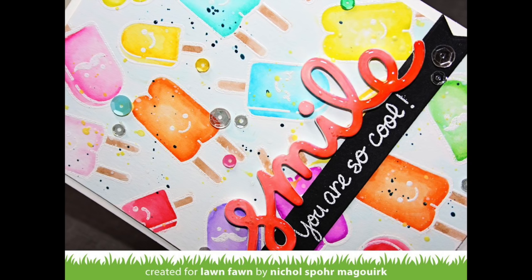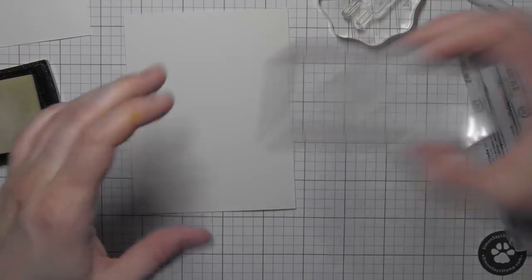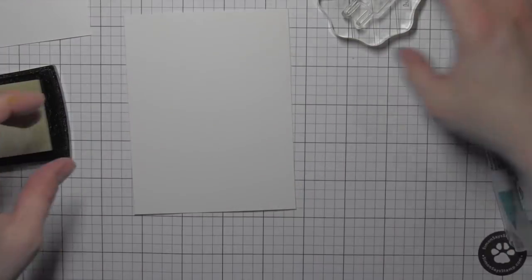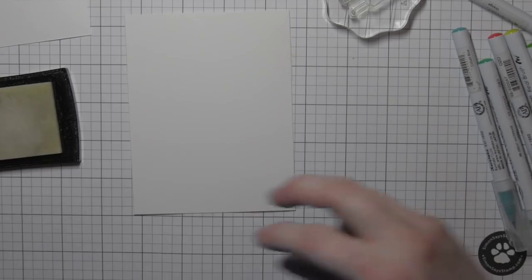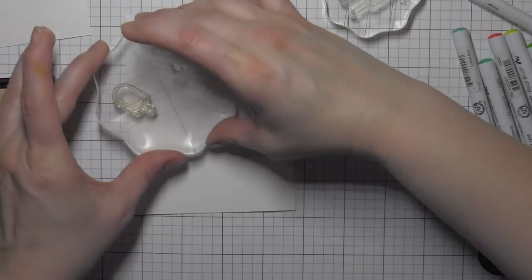I'm using Here's the Scoop and Best Pun Ever. I'm starting with a piece of Bristol cardstock. This is the cardstock I like to use with the Zig Clean Color Real Brush markers, and I am stamping the popsicle images.